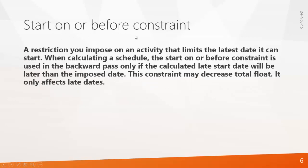The Start On or Before constraint is a restriction you impose on an activity that limits the latest date it can start. When calculating a schedule, this constraint is used in the backward pass only if the calculated late start date will be later than the imposed date. This constraint may decrease total float and only affects late dates.